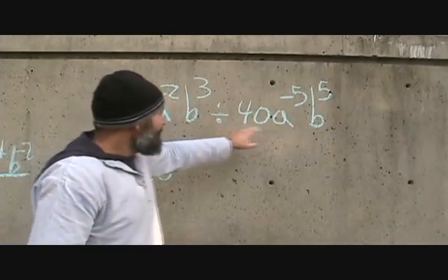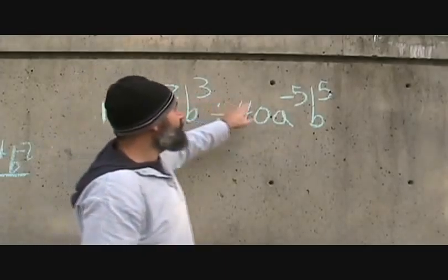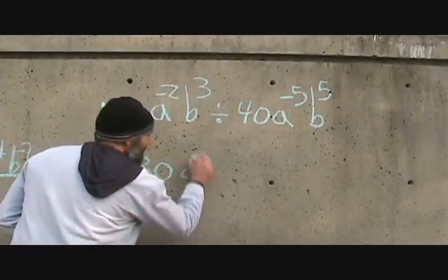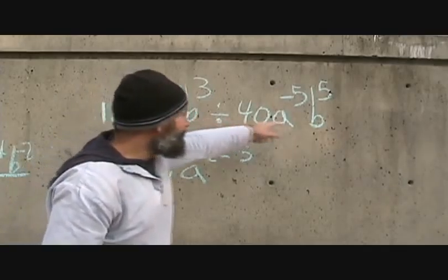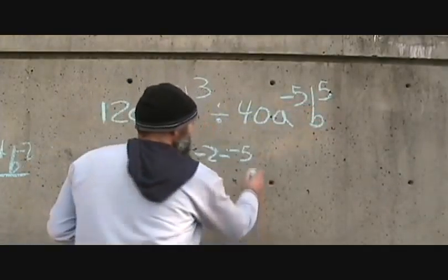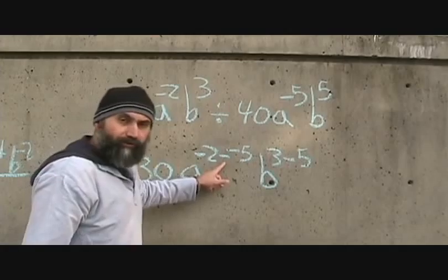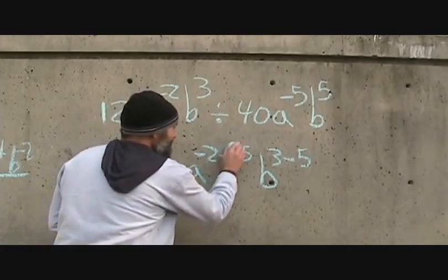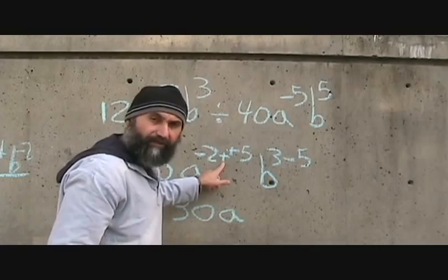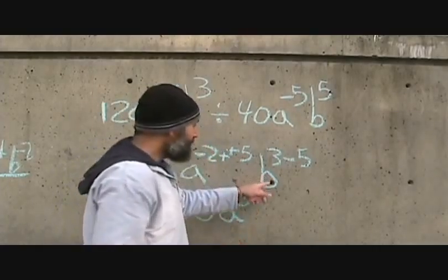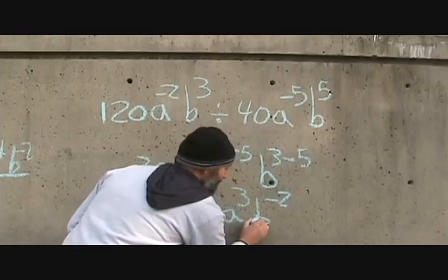For a to the negative 2 divided by a to the negative 5, you subtract the exponents with division, so it becomes negative 2 minus negative 5. You do the same thing with the b because the bases are the same, so it becomes 3 minus 5. A negative minus a negative becomes a positive, so this becomes 30a to the power of negative 2 plus 5, which is 3. And b to the power of 3 minus 5 is negative 2.